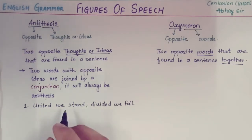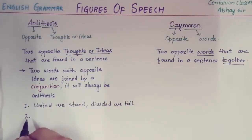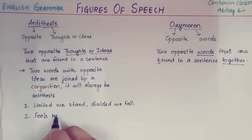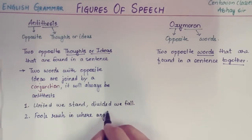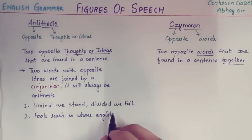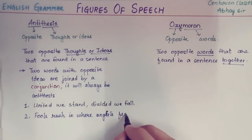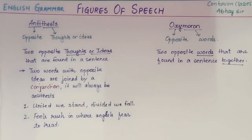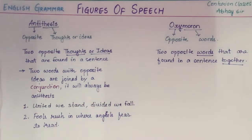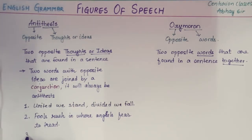The next example is: 'Fools rush in where angels fear to tread.' 'Tread' means to walk. Fools are those acting unwisely, and angels are very smart, sensitive, and sensible. So two different thoughts come together with the help of the conjunction 'where.' That conjunction 'where' joins the two opposite ideas, making it antithesis.